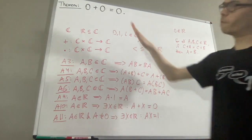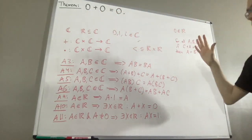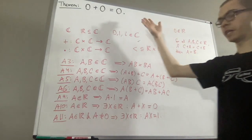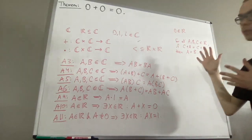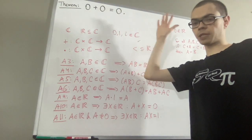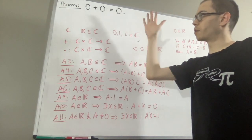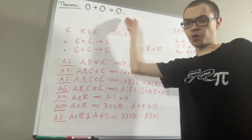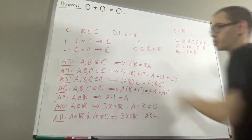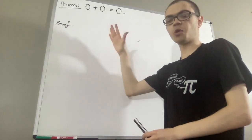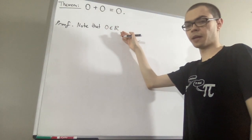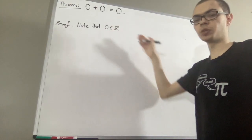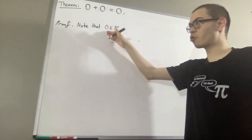So now let's prove that zero plus zero is equal to zero. Notice there is an axiom that tells us for every real number a, a plus zero is equal to a — but we're starting with zero plus zero equals zero. To start the proof, note that zero is a real number. Since zero is a real number, we apply axiom ten: there must exist some real number, I'll call it c, such that zero plus c is equal to zero.